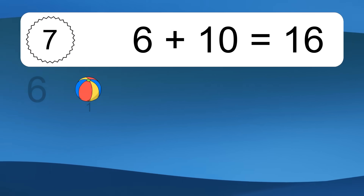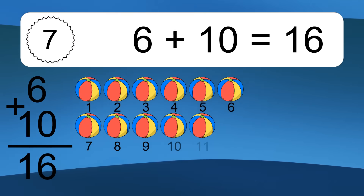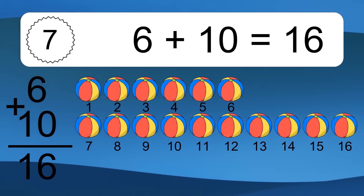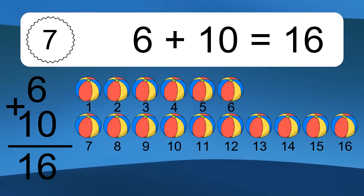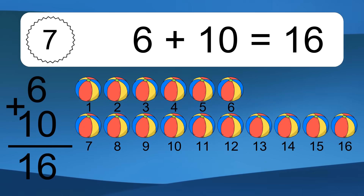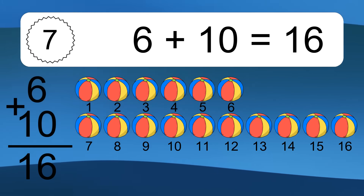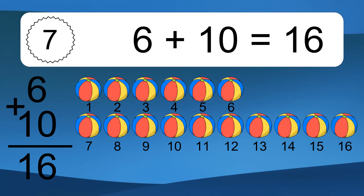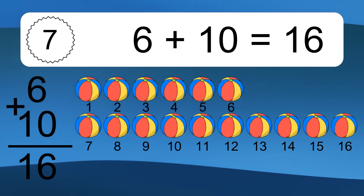6 plus 10 equals what? 6 plus 10 equals 16. Let's count it: 1, 2, 3, 4, 5, 6, 7, 8, 9, 10, 11, 12, 13, 14, 15, 16.